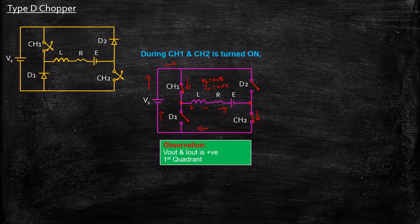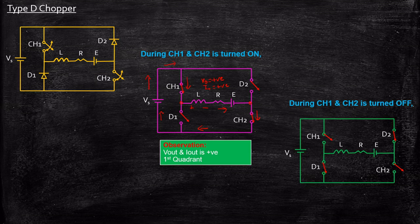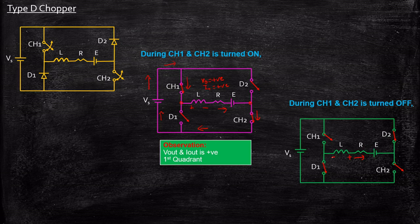When CH1 and CH2 are turned on simultaneously, current flows from the source to the load. Now, when CH1 and CH2 are turned off simultaneously, let's draw the equivalent circuit. CH1 and CH2 are represented as open circuits. The inductor does not allow a sudden change in current, so it reverses its polarity to minus and plus, ensuring current continues flowing in the same direction. Minus is connected to the cathode of diode D1, making D1 forward biased.